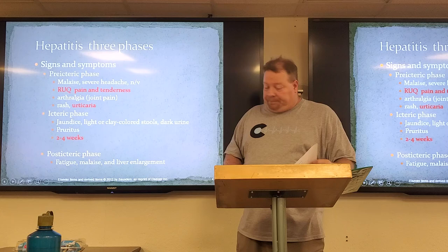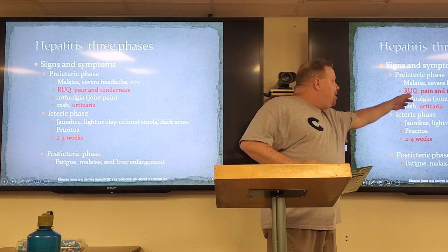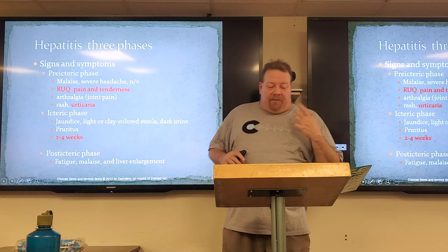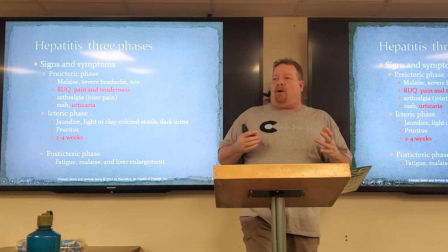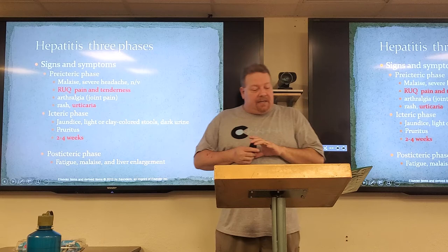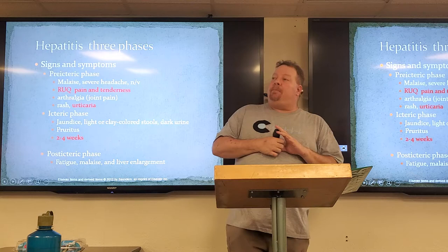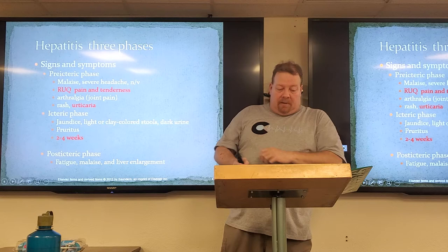Three phases and signs and symptoms. In your pre-icteric phase, you're going to have general malaise, headaches, nausea, vomiting. You might have right upper quadrant pain and tenderness. You're going to have arthralgia — joint pain — rash, and urticaria. It's not being filtered out through your blood, so it's going to be irritating your skin. The icteric phase is when you have high levels of jaundice, high levels of bilirubin, light or clay-colored stools. Your urine will be dark and you're going to have heavy pruritus — itchiness. This usually lasts about two to four weeks.